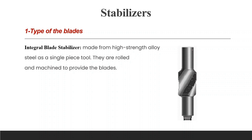The integral blade stabilizer can be a near-bit stabilizer or a string stabilizer — it can be under gauge or full gauge — any type of stabilizer.